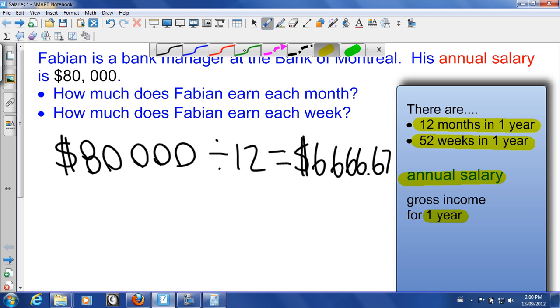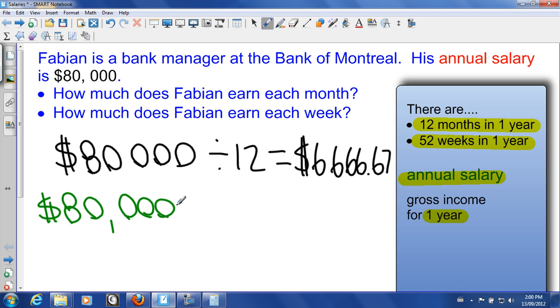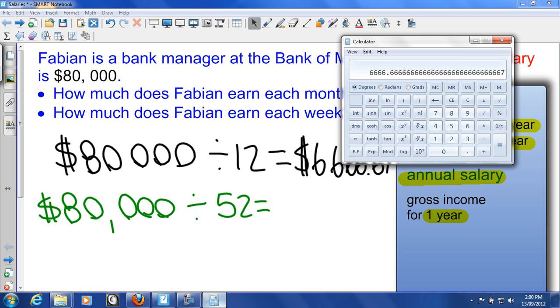So let's take our annual salary here of $80,000. And we will divide that by the 52 weeks that there are in a year. So what do we get?